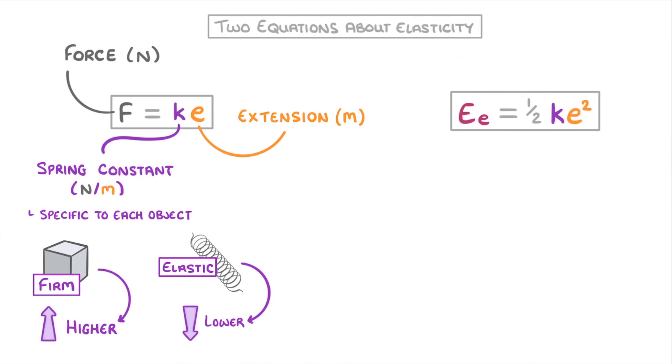The other equation is that elastic potential energy equals one-half KE squared, where K and E are the spring constant and the extension again. And importantly, it's only the extension that's being squared, not the whole thing.